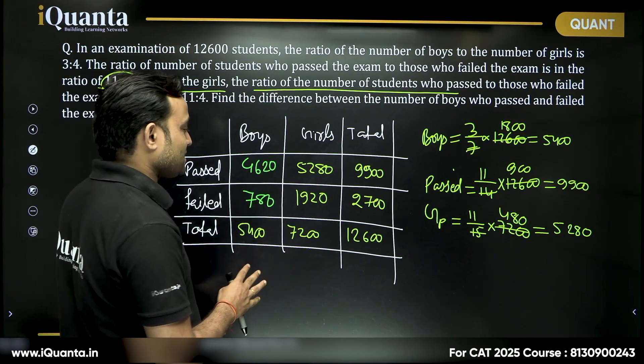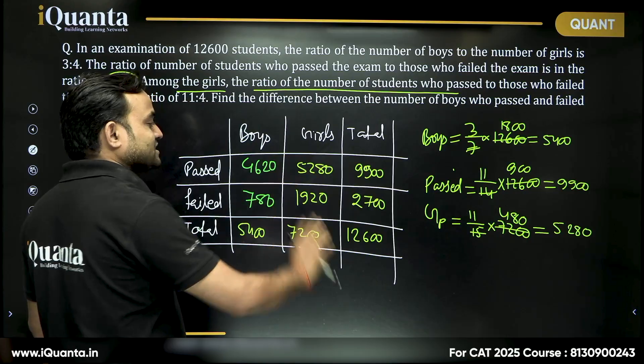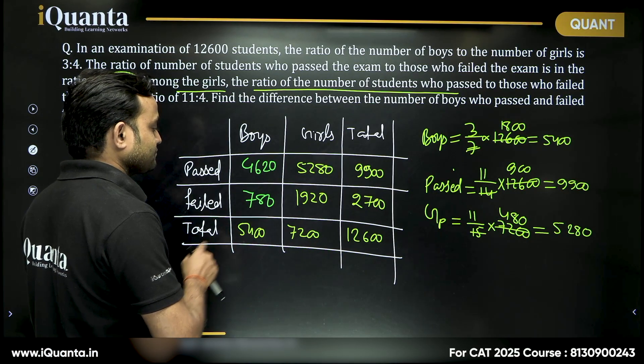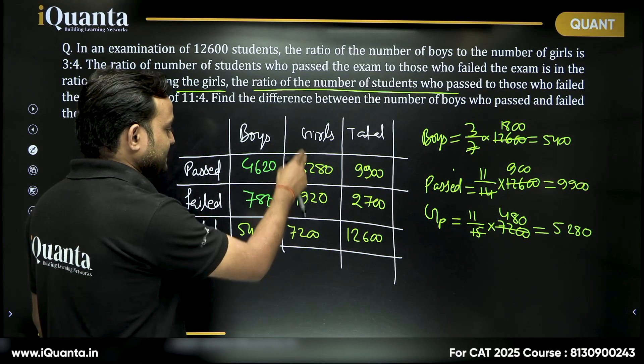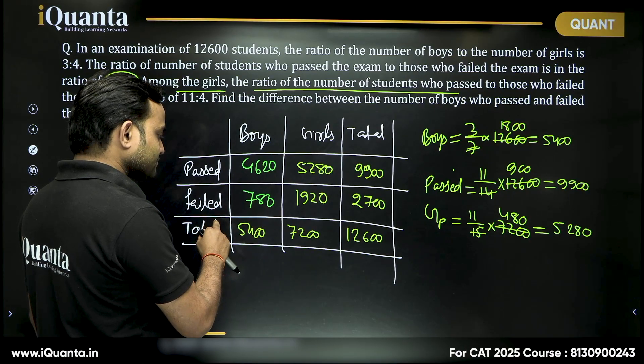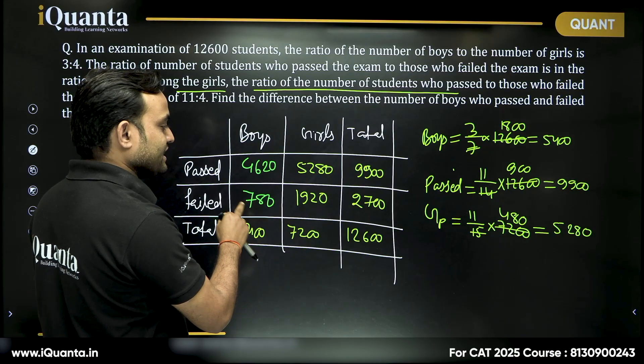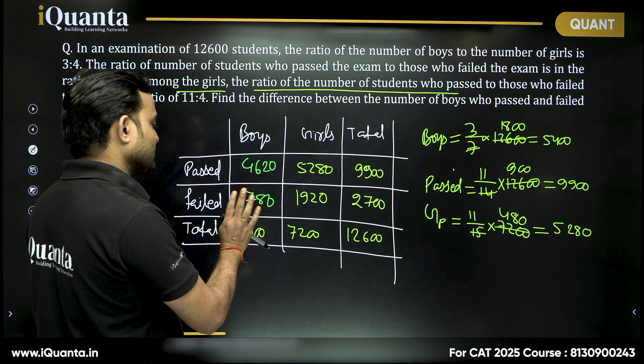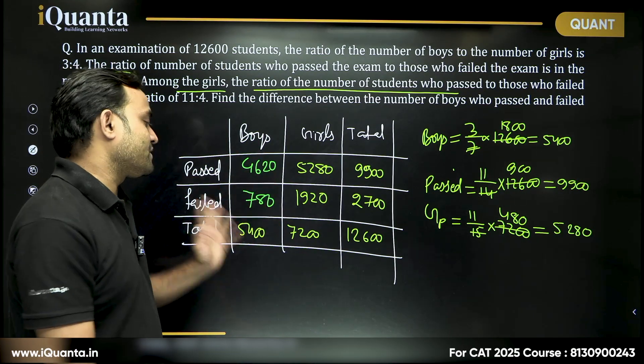So let's check our calculation again. 9,900 minus 5,300 is 4,600, 4,620. So in this case, is that clear? Yes. So I guess this will be 780. That is correct. So, okay. This calculation is all good. 46 plus 7, 53, 5,400.